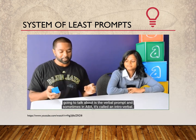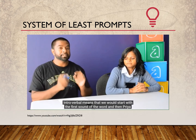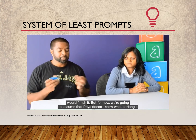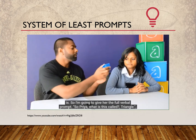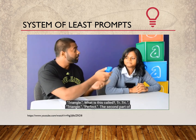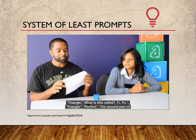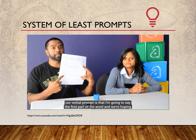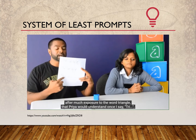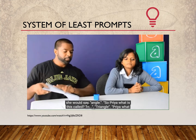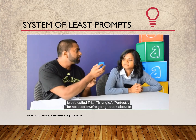The next type of prompt is a verbal prompt. In ABA, a partial verbal prompt is sometimes called an intraverbal — meaning we start the first sound of the word and Priya would finish it. For now, we'll assume Priya doesn't know what a triangle is, so I'm going to give her the full verbal prompt: 'Priya, what is this called? Triangle.' For the second part, I say only the first part of the word — 'Tri...' — and after much exposure, Priya would understand that when I say 'Tri,' she should say 'angle,' completing the word 'Triangle' independently.